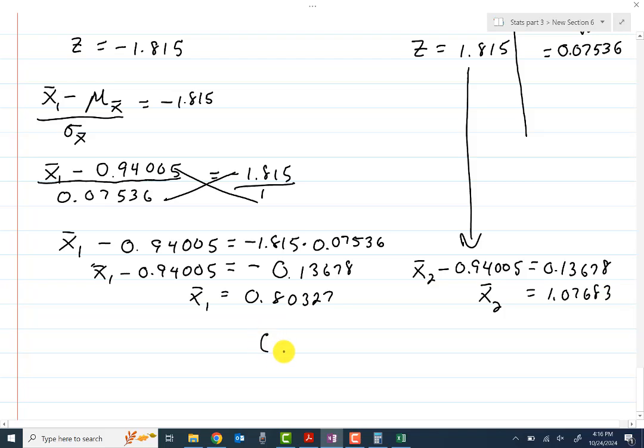And so, I've got the end points for my confidence interval. 0.80327 to 1.07683. We are 93% confident that the population mean is in between these two values.